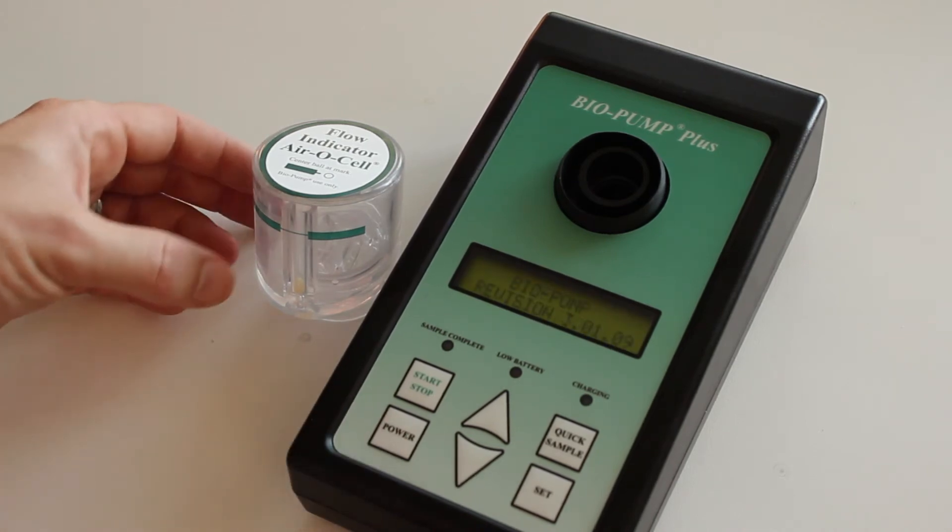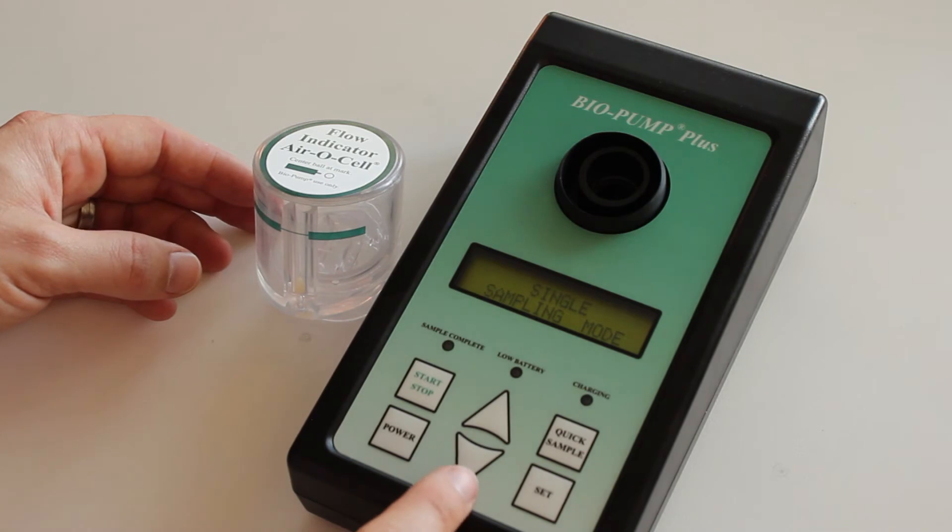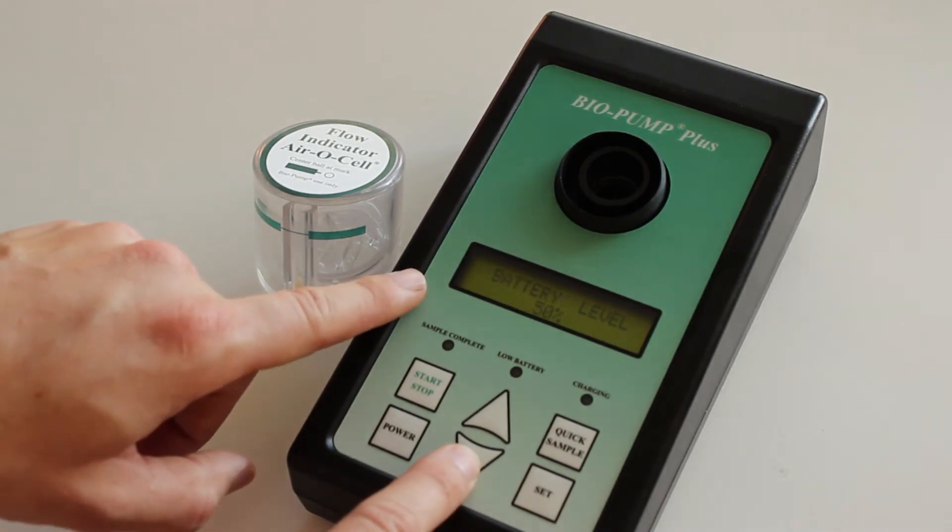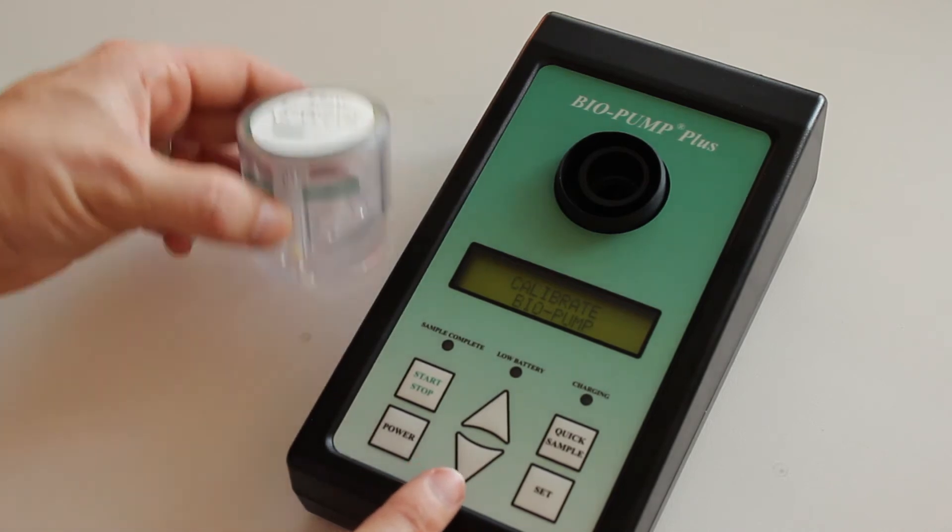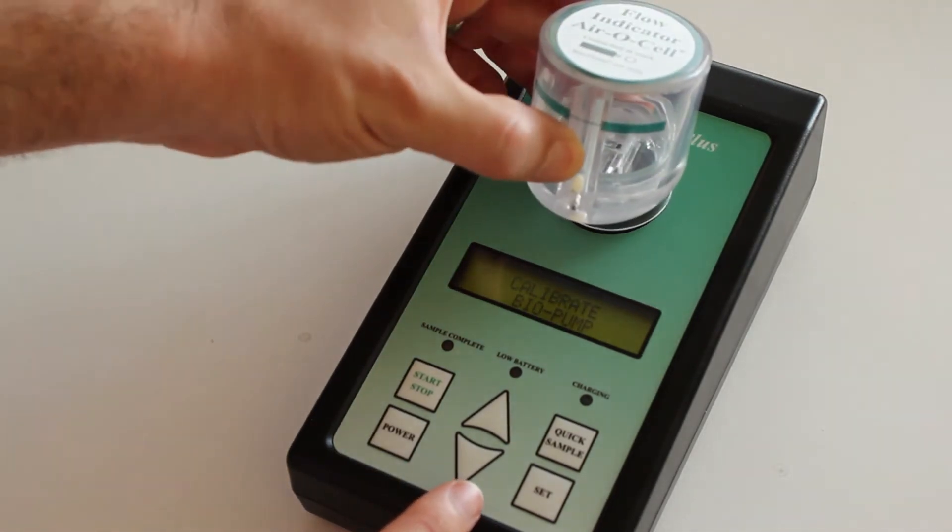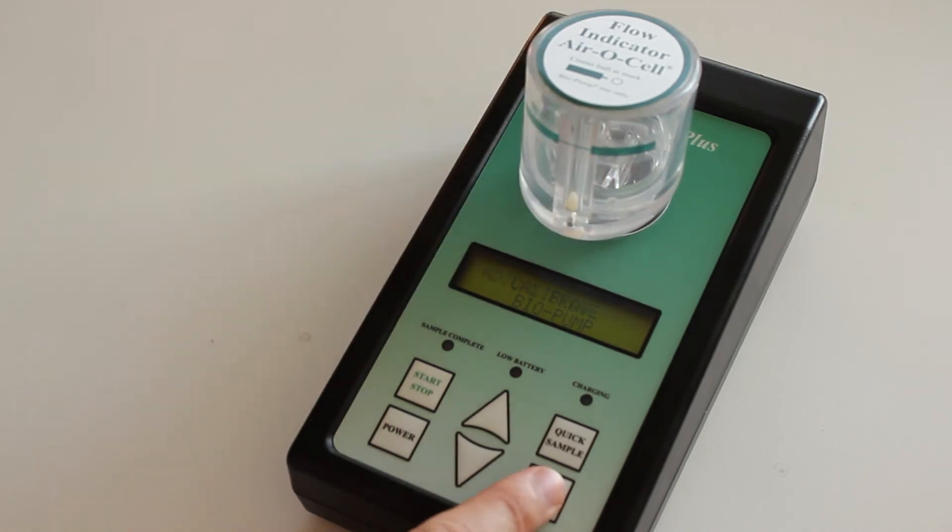Power on, wait for it to load. You'll press down, battery, down again, verify calibration, one more time to calibrate pump. What you'll do then is you'll place the flow indicator on here and press set.